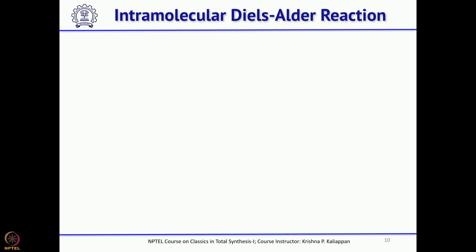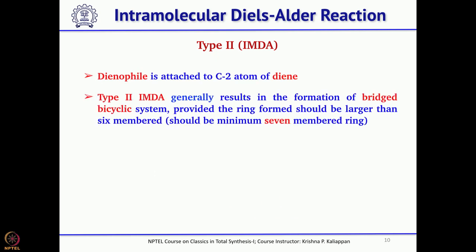In type 2, the dienophile is attached to carbon number 2 of the diene. This preferably and most likely gives a bridged bicyclic system. To form the bridged bicyclic system, you should have a minimum 7-membered ring. The 4+2 cycloaddition always gives a 6-membered ring, but the other ring being formed must be at least 7-membered for IMDA type 2 to work.